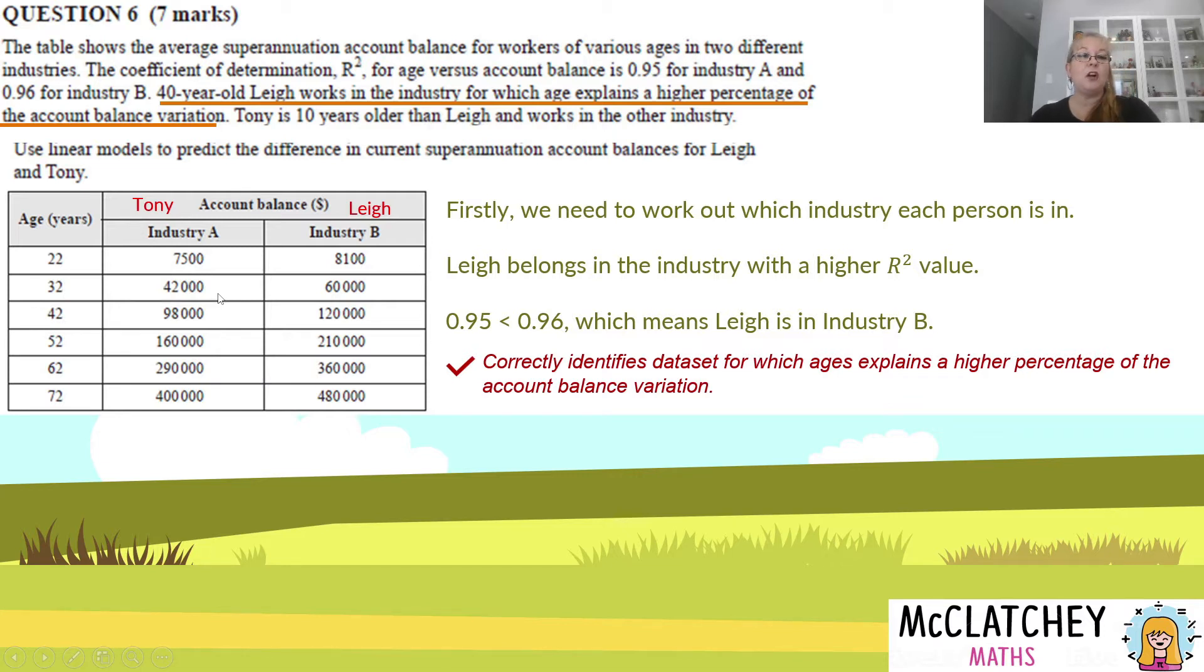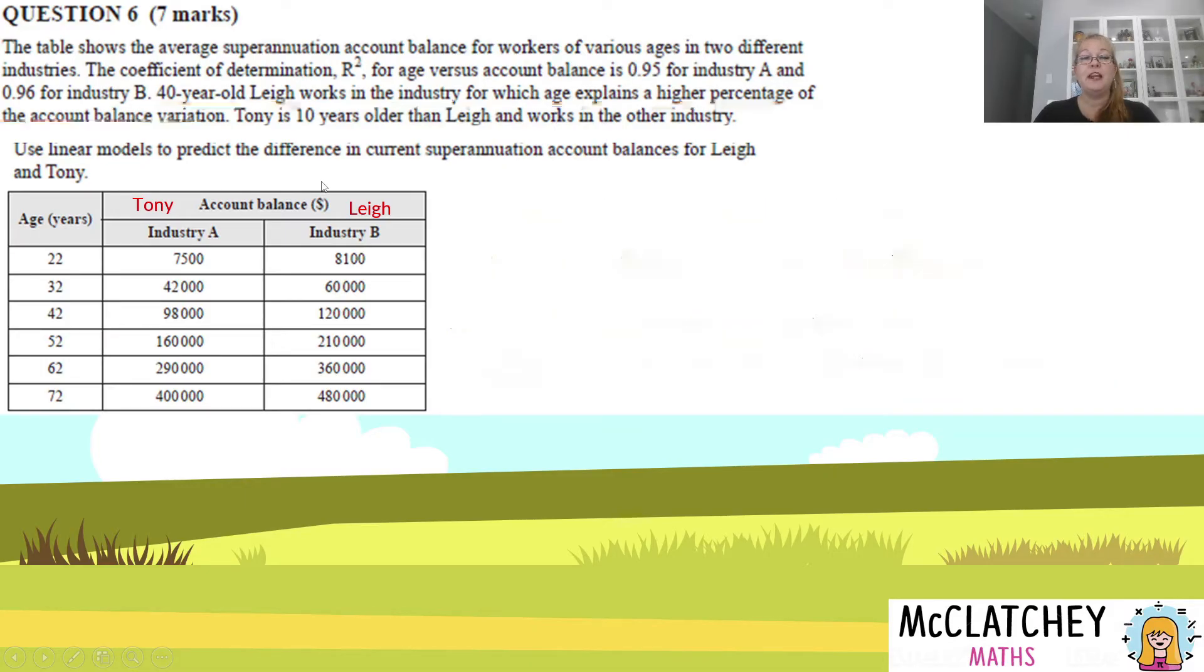This question really requires reading skills. Understanding what they want to know is probably the hardest thing. All that's saying is higher percentage means coefficient of determination—which one's higher? Industry B is higher, that's Lee. Our next step, they want us to use linear models. Models plural. That means we're going to have to find the A and B value for each of these versus their age and use those to actually come up with equations, the least squared regression line for Lee and for Tony.